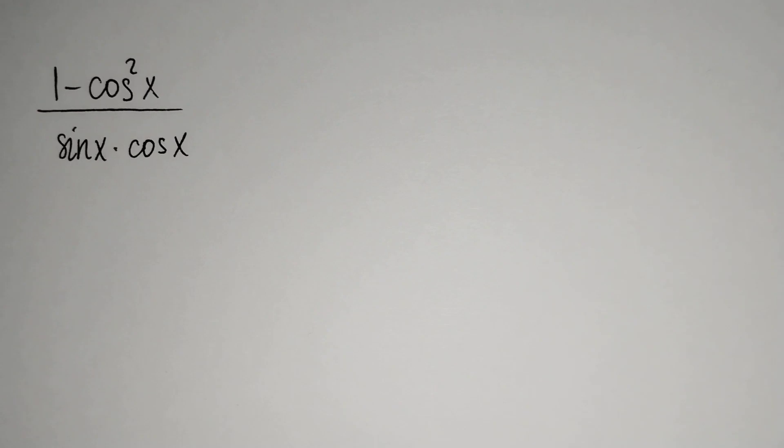Hi everyone, in this video we will simplify this expression: 1 minus cosine squared x over sine x times cosine x. How should we solve this problem?